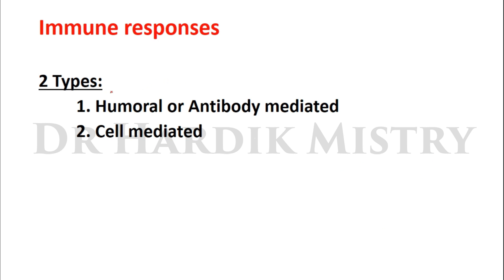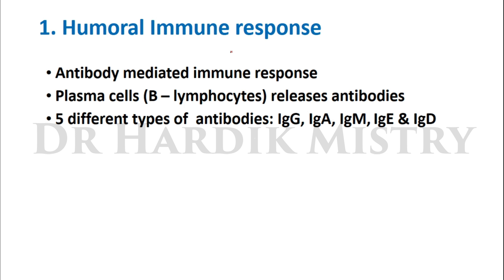There are two major types of immune responses: first, humoral or antibody-mediated immune response, and second, cell-mediated immune response. For humoral immune response, these are antibody-mediated immune responses. Plasma cells, which are a type of B lymphocytes, release the antibodies. There are five different types of antibodies: IgG, IgA, IgM, IgE, and IgD. Of these, IgM is the largest antibody in size.